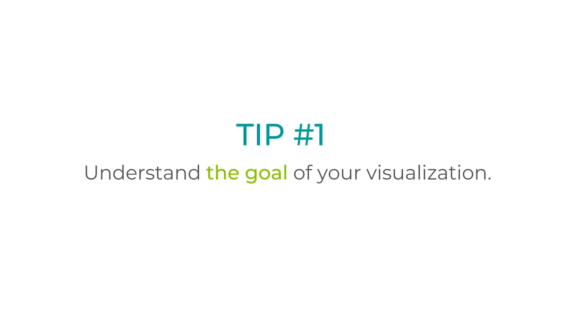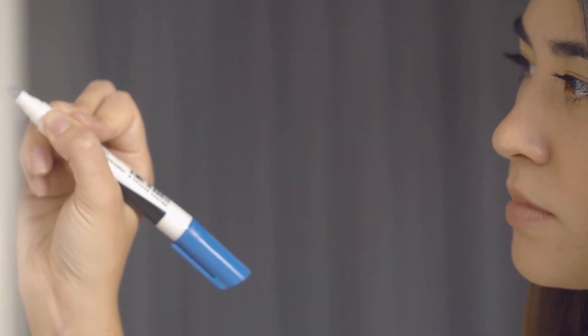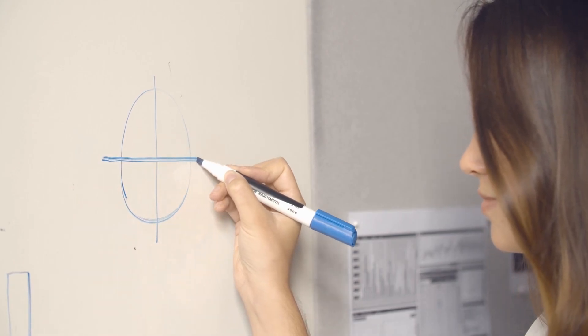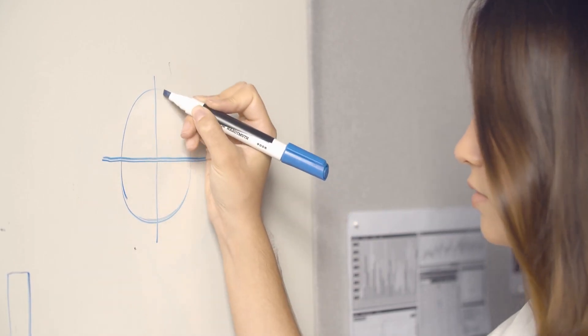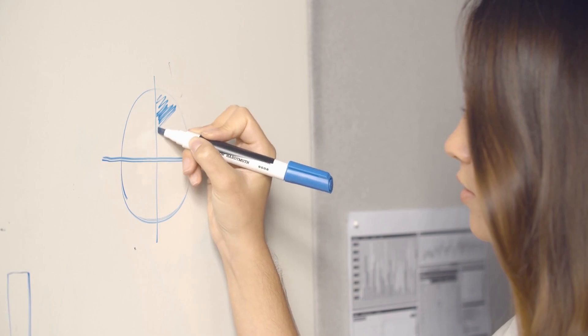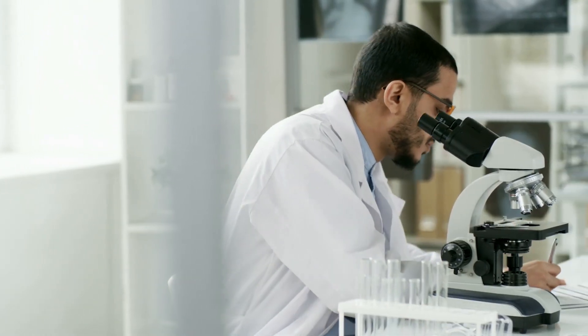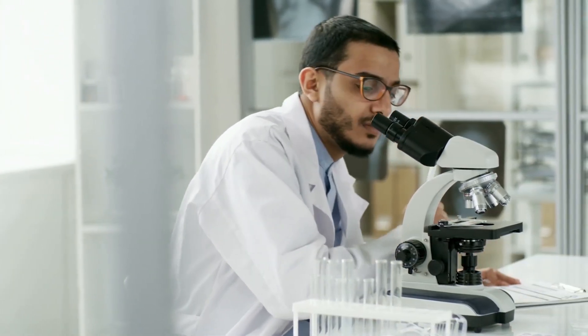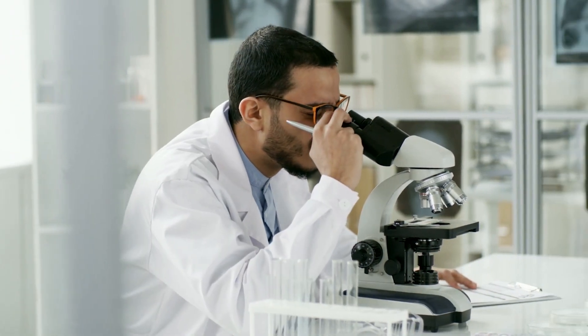The first tip is to understand the goal of your visualization. At this point in your research, you have drawn conclusions and know what your data is conveying. The reason you want to articulate your goal before starting to plot data points is to help you understand what is relevant to highlight. Having a plan also protects you from leaving out too much, which will unintentionally exaggerate or skew information.